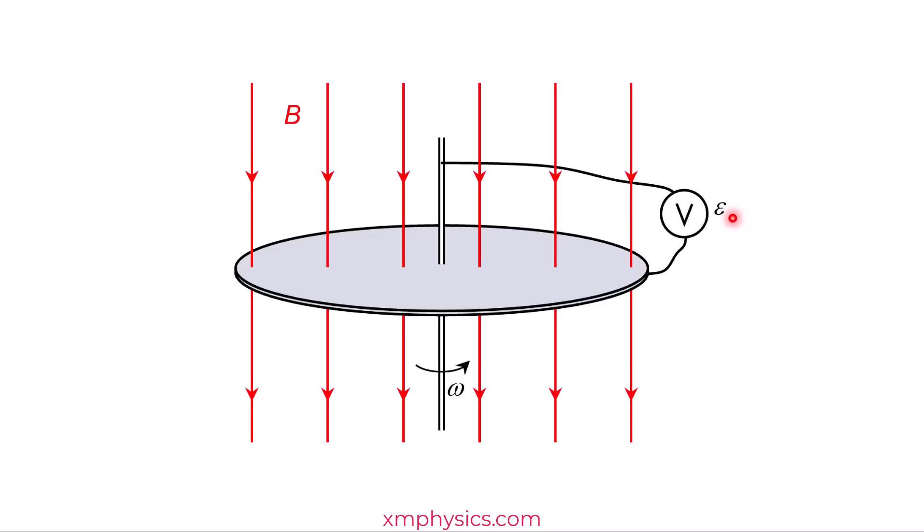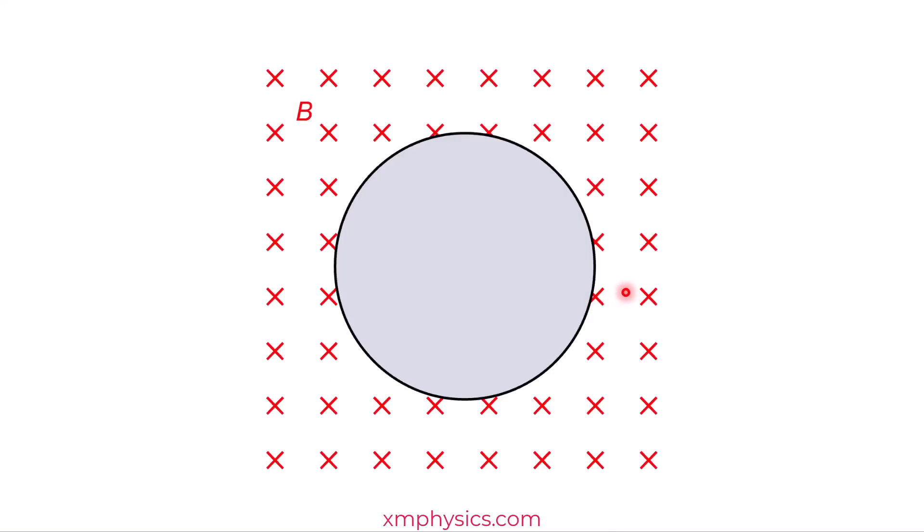The easiest way to understand how this works is to imagine that the disc is made out of many wires. So in this diagram, I'm showing the top view. The magnetic field is going into the screen. So as I mentioned, instead of one solid disc, we can imagine that it's actually made out of many wires, like the spokes on your bicycle wheel.